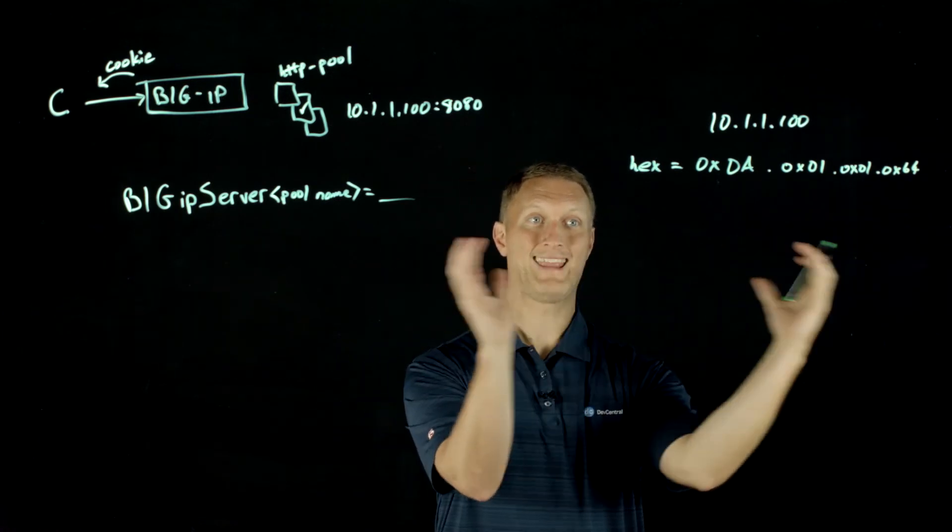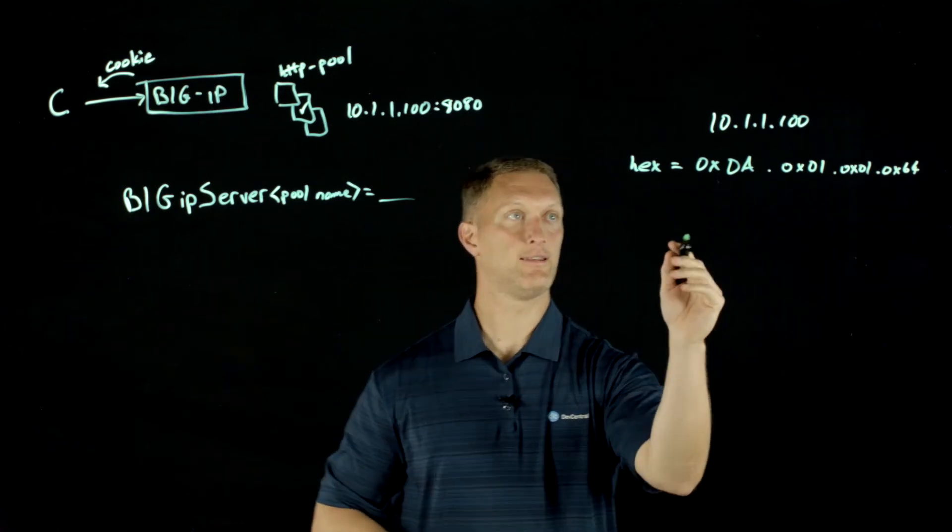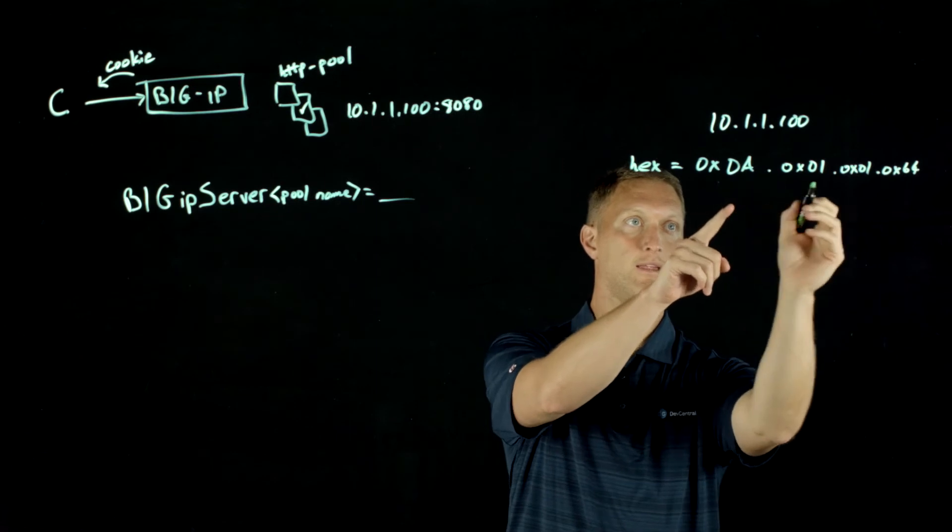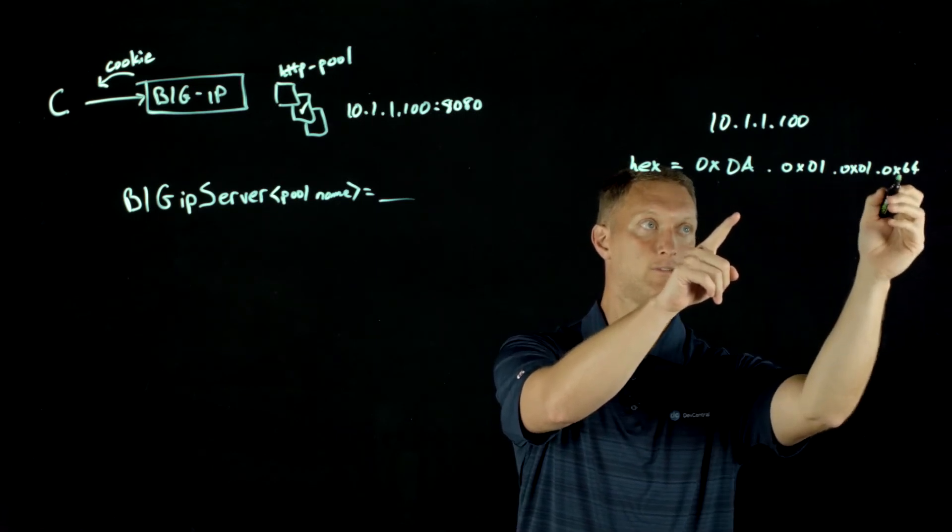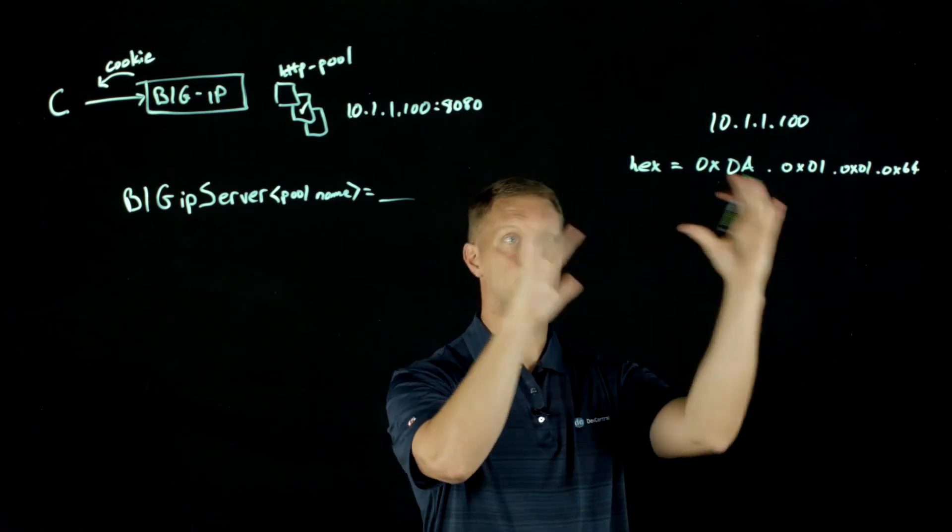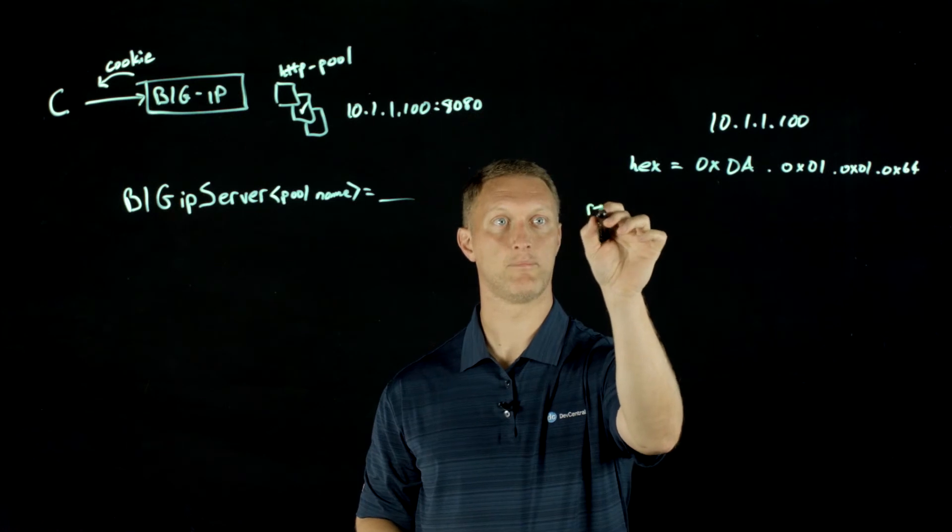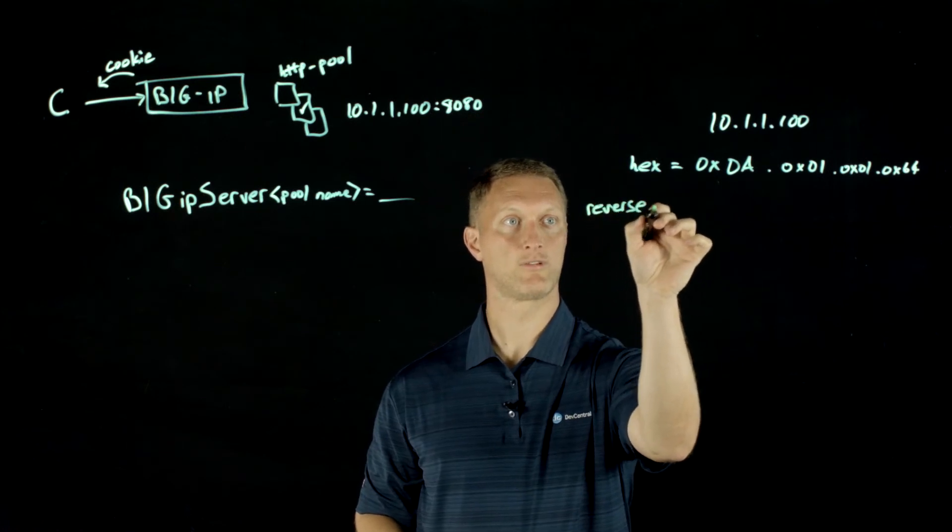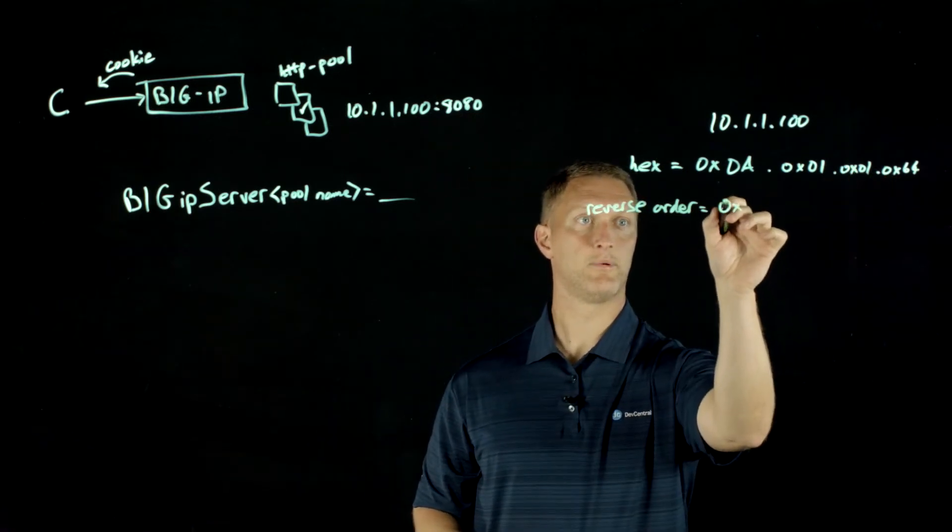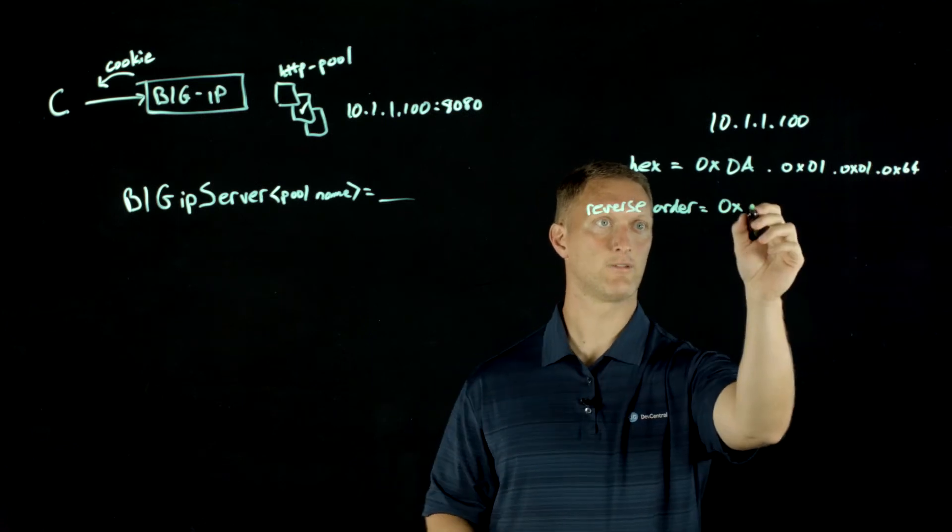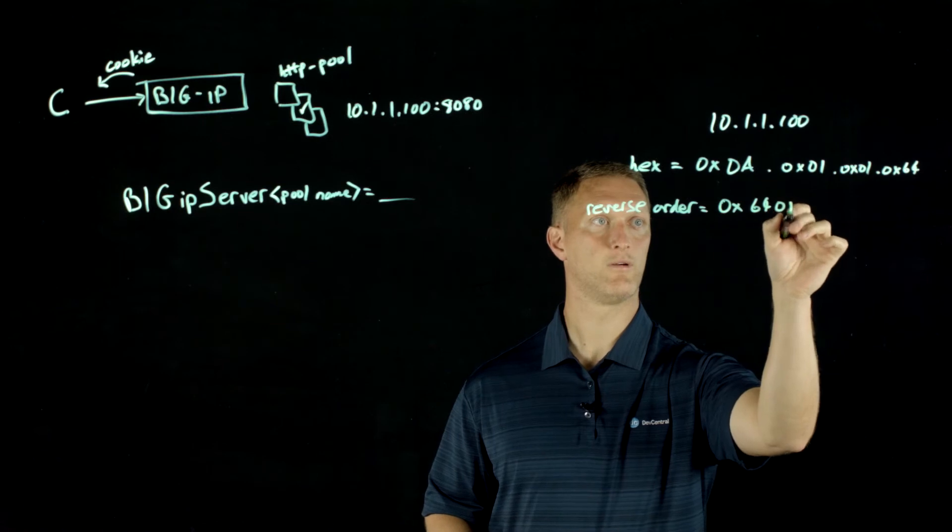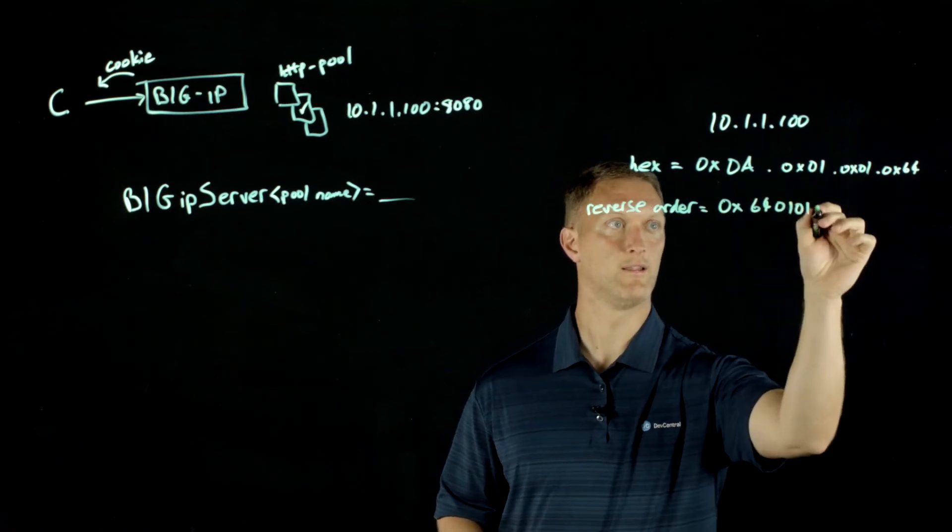Then we're going to concatenate all those together. We're going to crunch them all together, and we're going to drop this 0x in front of each one of them. So now we've got 0A, 01, 01, 64. We're going to crunch all that together. Then we're going to reverse order that. So reverse order equals, we're going to start with, I'll put the 0x up here just to let you know that we're still in hexadecimal values. It's going to be 64 there, and then we're going to come backwards 01, and then backwards again 01, backwards again 0A.